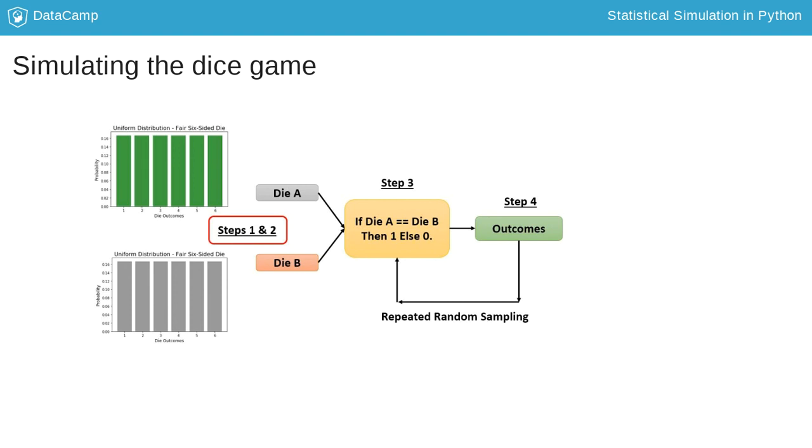For steps 1 and 2, we first define the outcomes of the die and assign a probability to each outcome. Since both die A and B are fair dice, we can use identical probability distributions. Also, since the probability of each outcome is the same, this is a uniform distribution.